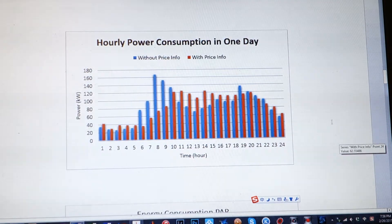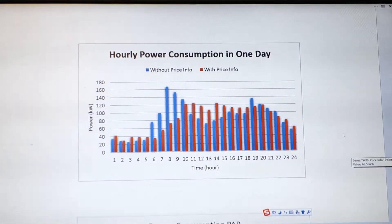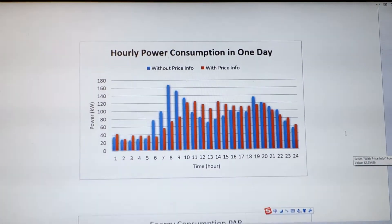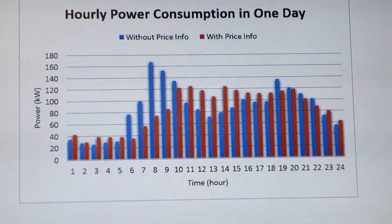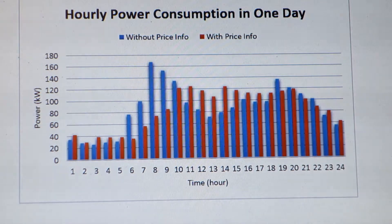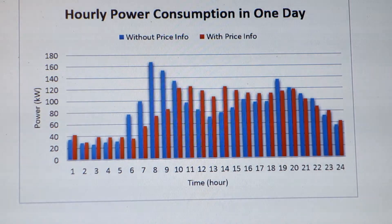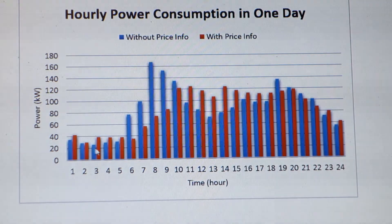Now I'm going to show the results. Using this dual-simulator strategy, we collect statistics across two cases. Case one is without price information — no adaptive control. Case two is with price information, enabling adaptive control and load shifting from one time slot to another. The blue line shows without price information: power consumption is higher, with higher peak power consumption.